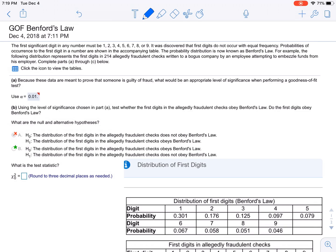Probabilities of occurrence for the first digit in a number are shown in the accompanying table. The probability distribution is now known as Benford's Law. For example, the following distribution represents the first digits...